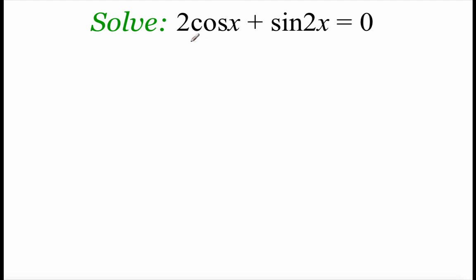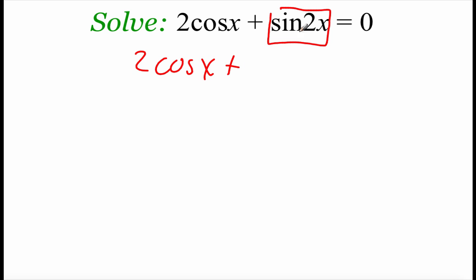In this first example, we're asked to solve 2 cosine of x plus sine of 2x equals 0. Looking at the second piece, since we've got that sine of 2x, we can use one of our double angle formulas and replace sine of 2x with 2 times the sine of x times the cosine of x, and that's equal to 0.